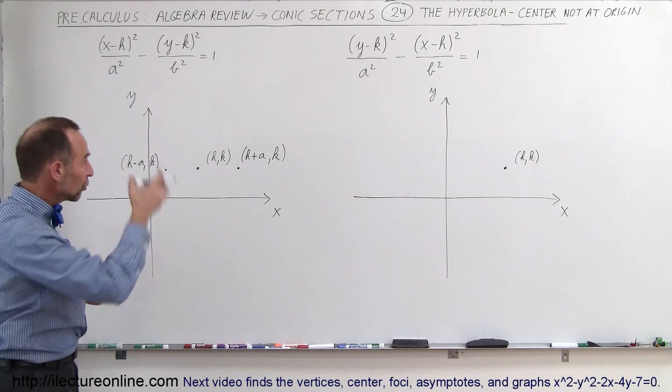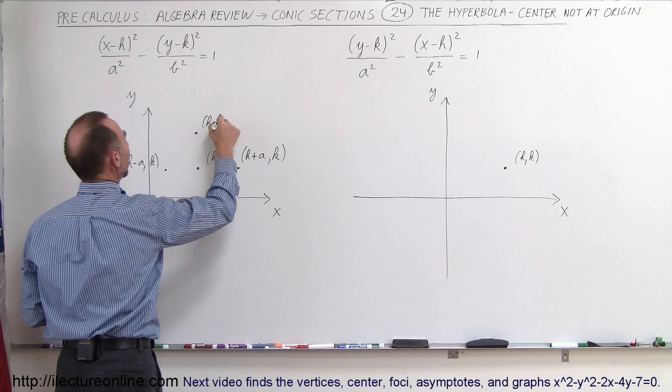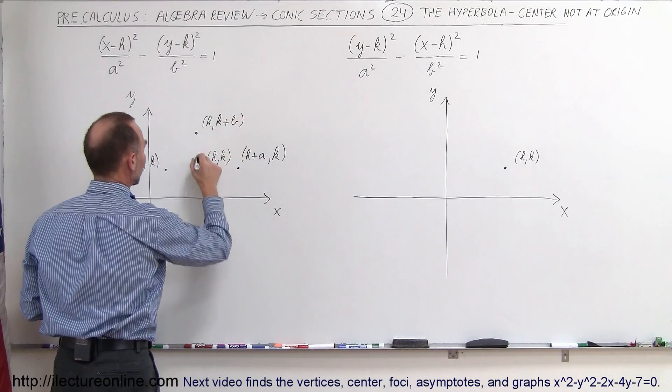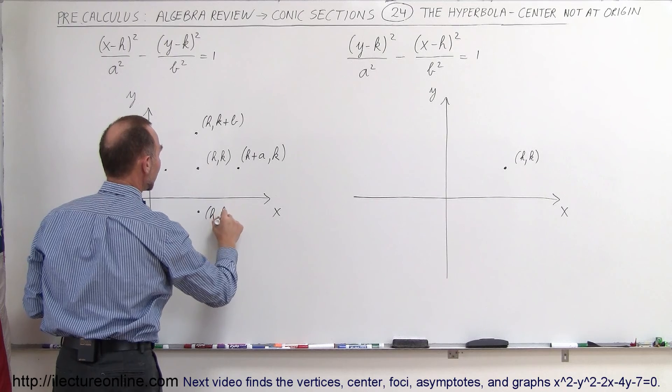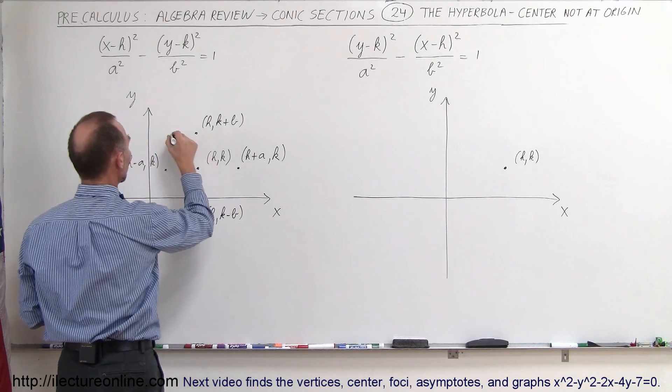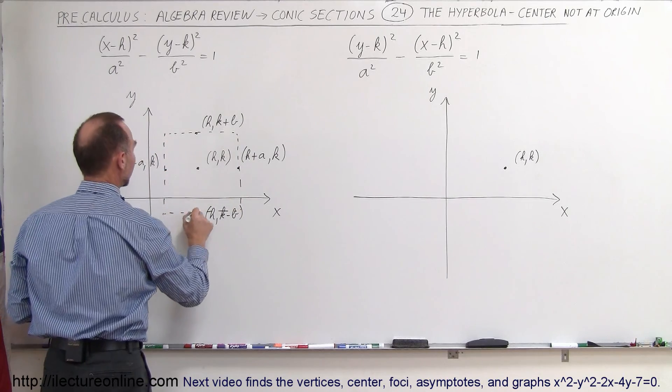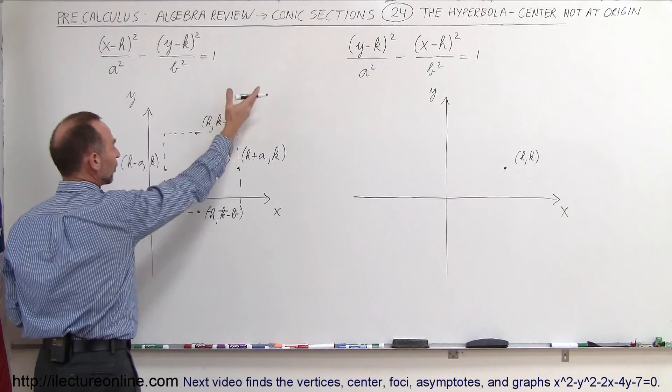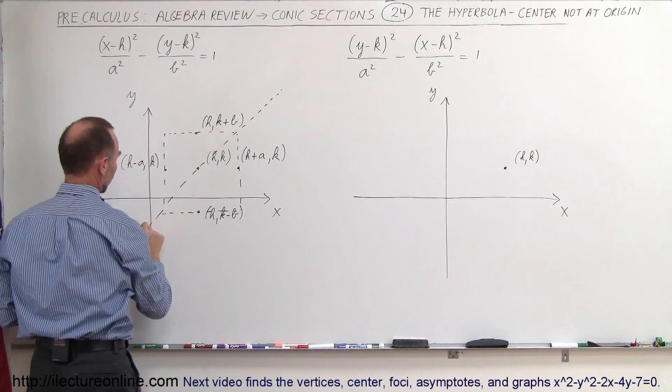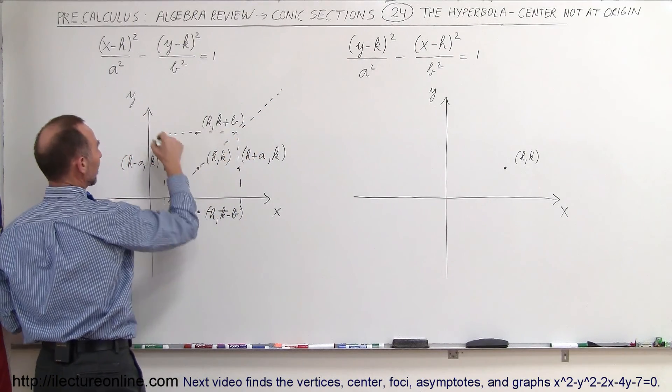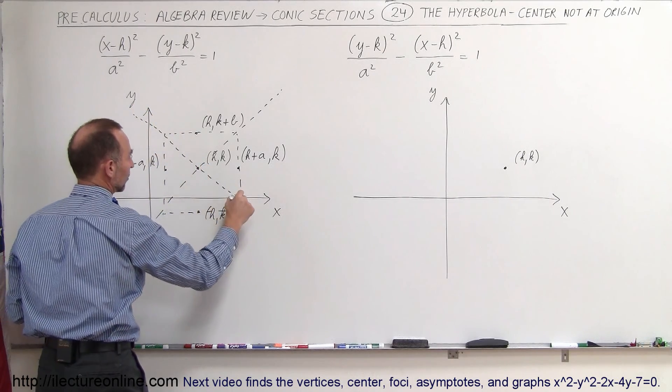Then in the vertical direction, over here, you're going to find the point h and k plus b, and over here, down here, you're going to find the point h and k minus b. And then you go ahead and draw the box, like so. And then, of course, you're going to draw the lines that are going from corner to corner. So this is our first line right there, corner to corner, and through the center h,k, and again over here, corner to corner, and through the center h,k.